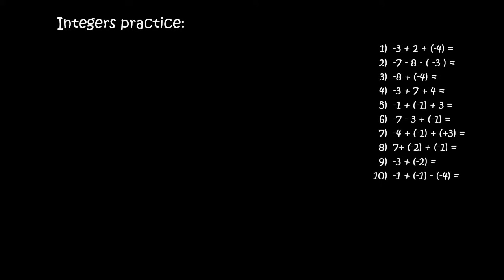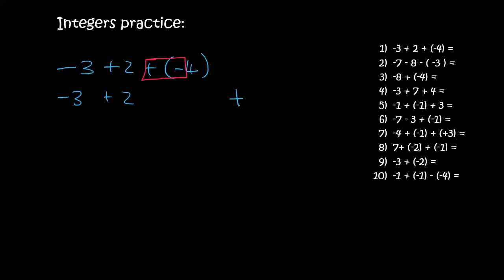Alright, so the first one — we're going to take our time. It's minus three plus two plus minus four. Step one: remove all the brackets. So we've got minus three plus two. Now what we see here is a plus and a minus next to each other. A plus and a minus is the same as a minus, so I'm going to change all of that to a minus.